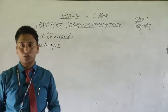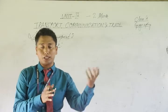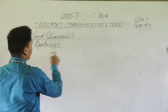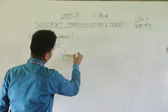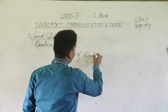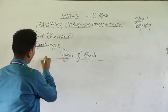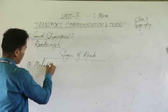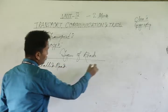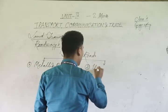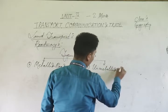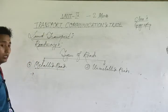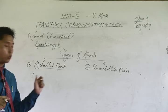Now, the types of roads. Number one: metal roads. Number two: unmetalled roads. Metal roads are also called surface roads, and they have a black top cover.